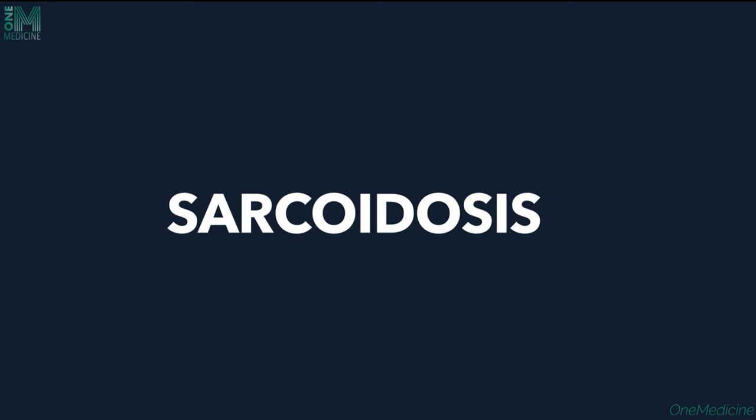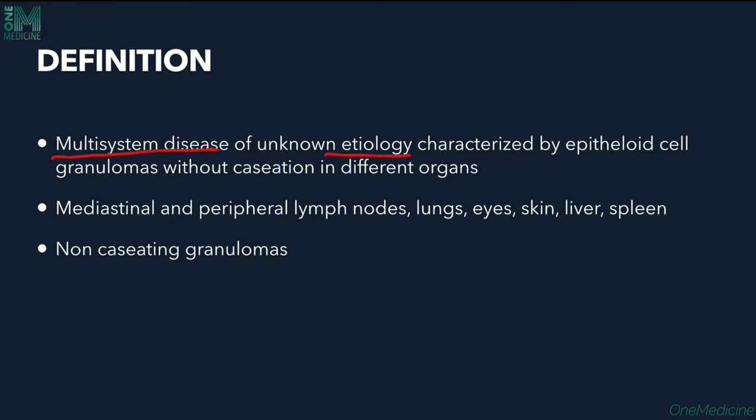Today we will talk about sarcoidosis. Sarcoidosis is a multi-system disease of unknown etiology characterized by epitheloid granulomas without caseation in different organs. It is a disease which has granulomas — mostly epitheloid granulomas — wherein we don't find any caseation in the center, and these granulomas are present in different organs.